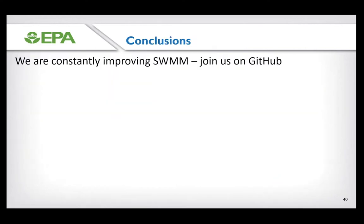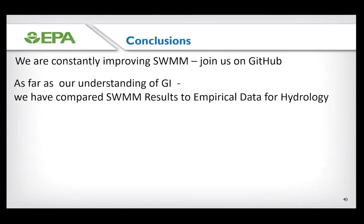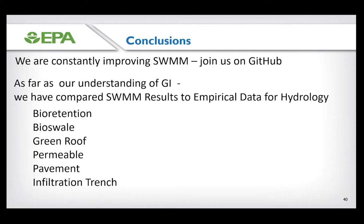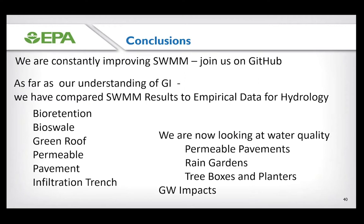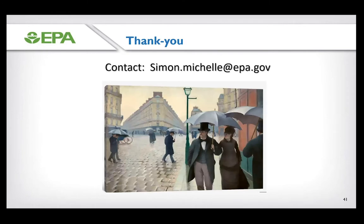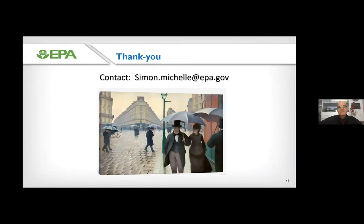In conclusion, we are constantly trying to improve SWMM. If you would like to improve the code itself, please join us at GitHub. We are comparing SWMM results to empirical data for hydrology — bioretention, bioswale, green roof, permeable pavement, and infiltration trench — and we're now starting to actively look at how SWMM projects water quality for permeable pavement, rain gardens, tree boxes, planters, and groundwater impacts. I appreciate your time and I'm happy to answer questions — or drop me an email and I'll connect you with the relevant EPA lead investigator.